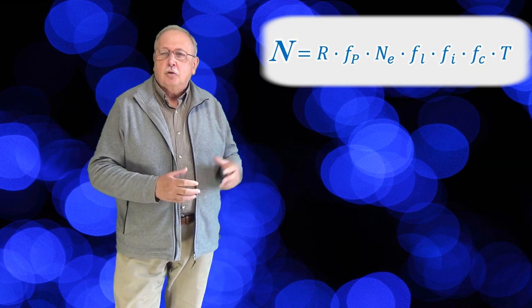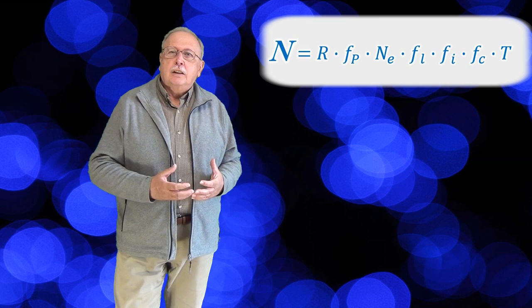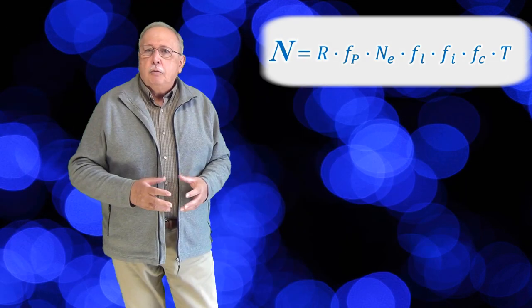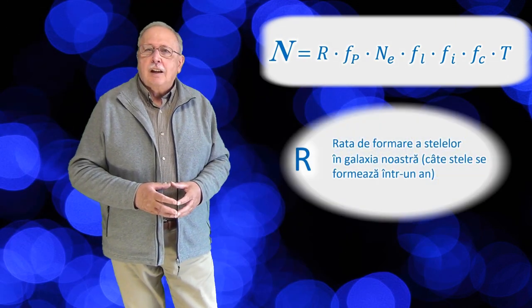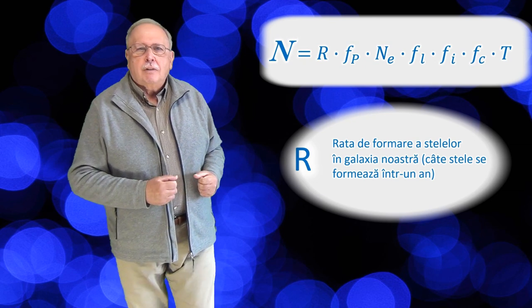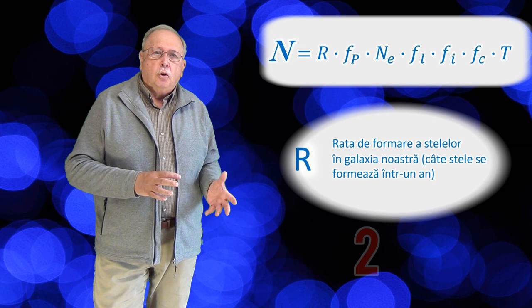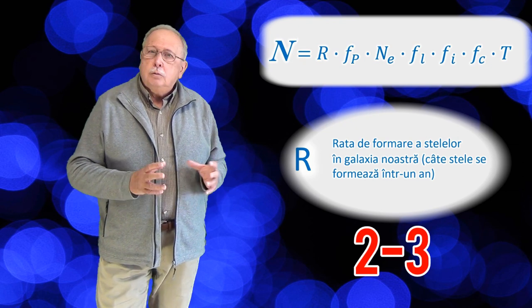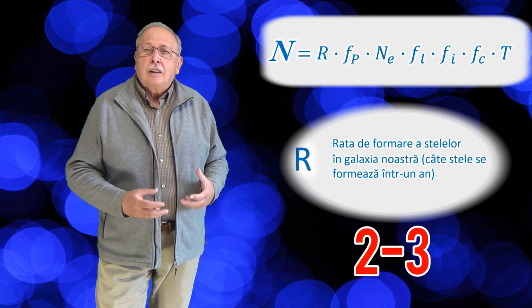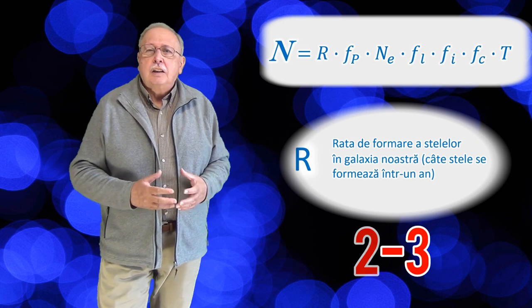Și acum să luăm factorii din ecuația lui Drake pe rând și să-i estimăm prin prisma celor mai recente cunoștințe astronomice, astrofizice, biologice pe care le-am găsit în surse de încredere în cărți sau pe internet. Sper că n-ați uitat ce calculăm, ce este N mare din stânga semnului egal. Este numărul de civilizații din galaxia noastră care pot și încearcă să comunice cu alte civilizații prin semnale radio. Primul factor, R mare, rata de apariție a stelelor în galaxia noastră. Cele mai recente observații astronomice și calcule astrofizice arată că el are valoarea cuprinsă între 2 și 3. Putem spune cu destul de bună precizie că în galaxia noastră apar în medie 2-3 stele pe an.